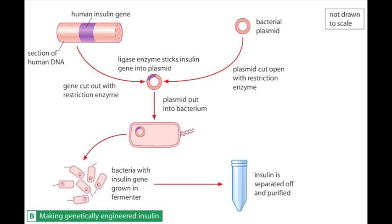Why was there so much interest in a four-year-old Californian company specialising in genetic engineering? Two years previously, scientists at Genentech had isolated the human genes which carry the code that enables particular cells of the pancreas to produce the hormone insulin.